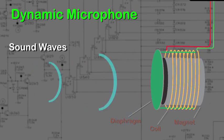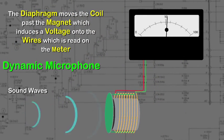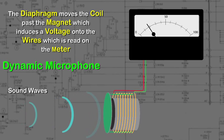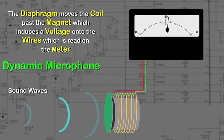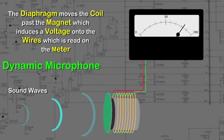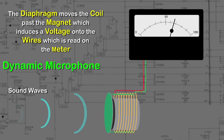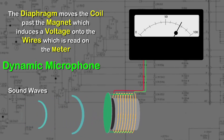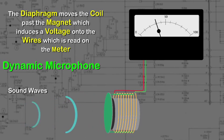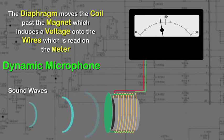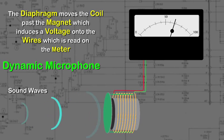As the diaphragm moves, the coil also moves. As it moves past the magnet, a voltage is induced into the coil when it cuts through the magnetic lines of force surrounding the magnet. This voltage is connected to a transformer to raise the impedance to 600 ohms. The drawback of a dynamic microphone is the mass of the diaphragm and the coil, all of which the delicate sound waves must move in order to produce an electrical voltage.